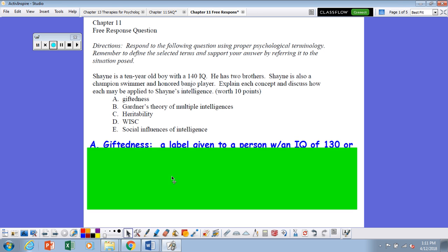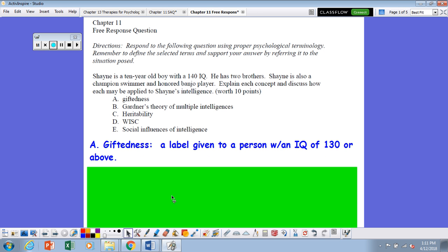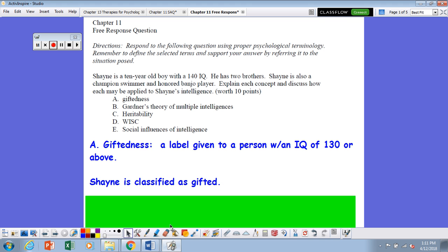So let's start with letter A, giftedness. This is a label given to a person with an IQ of 130 or above. And Shane, because of his 140 IQ score, would probably be classified as gifted.